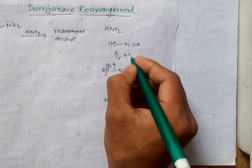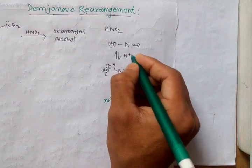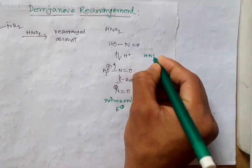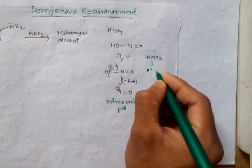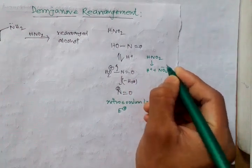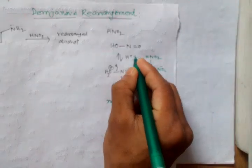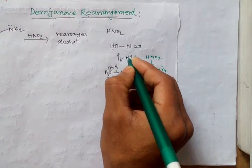Here the presence of H+ comes from HNO2. When HNO2 dissociates to give H+ and HNO2-, this H+ is the source.